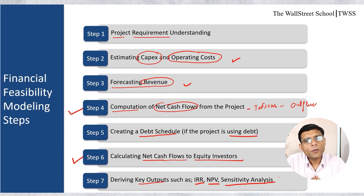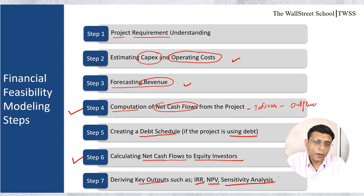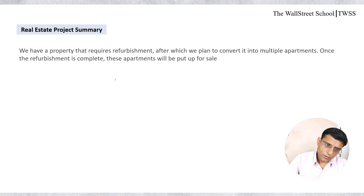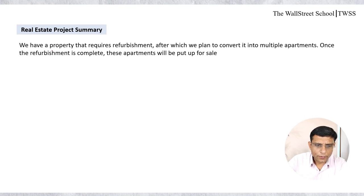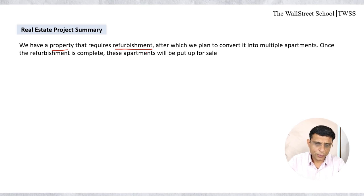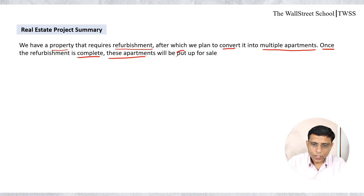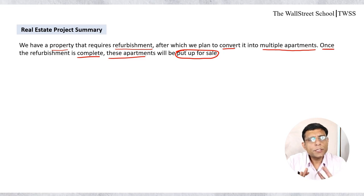Now we will apply this 7-step process to prepare a financial feasibility model on a real estate project. First, let's understand the key assumptions. We have assumed a property that requires some refurbishment. There is an old property and we need to do some refurbishment, after which we are planning to convert it into multiple apartments. Once the refurbishment is complete, these apartments will be put up for sale — the property will be converted into small apartments and then sold.